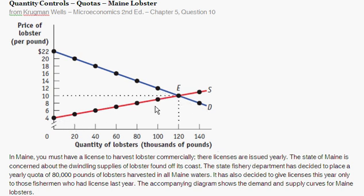Inversely, you have the upward sloping supply curve. At very low prices, for example $6 per pound, you have a relatively low quantity supplied — in this case, 20,000 pounds. And at a relatively high price, around $12 per pound, you have a relatively high quantity supplied of 140,000 pounds of lobster. So the usual demand and supply curves: demand curve is downward sloping, supply curve is upward sloping, with actual numbers for prices and quantities.